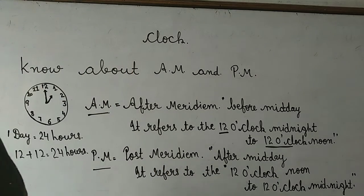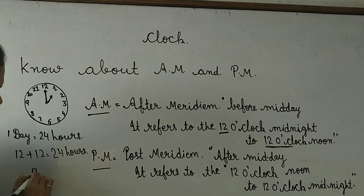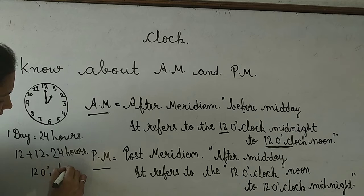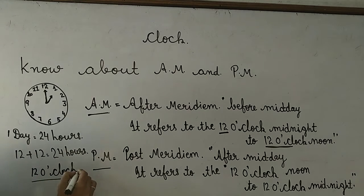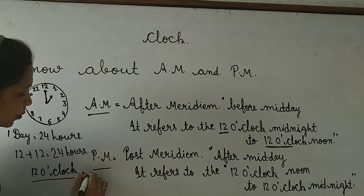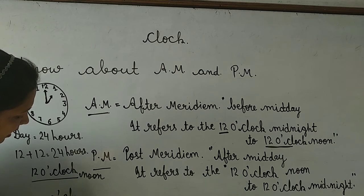Ab isme ek baat hori hai — jo humara time hoga exactly 12 o'clock noon ka, aur 12 o'clock midnight ka, isko na toh hum A.M. mein count karenge, na hi P.M. mein. Isko hum kya bolenge? 12 o'clock noon. Aur jo raath ki 12 o'clock hogi, isko hum bolenge 12 o'clock midnight.